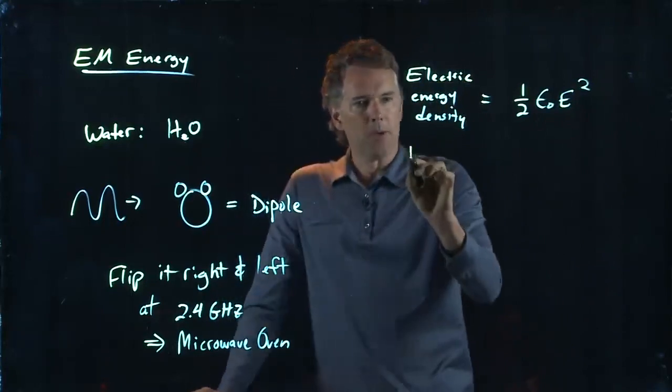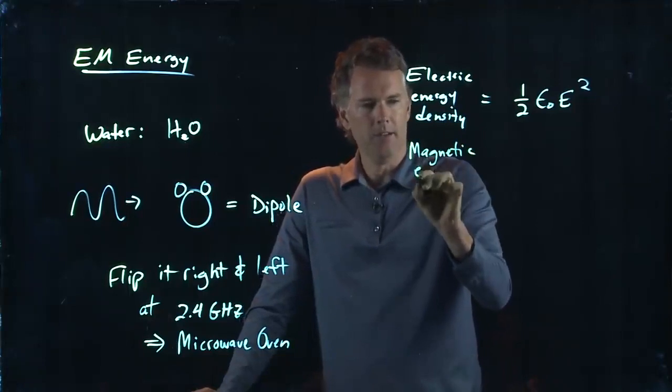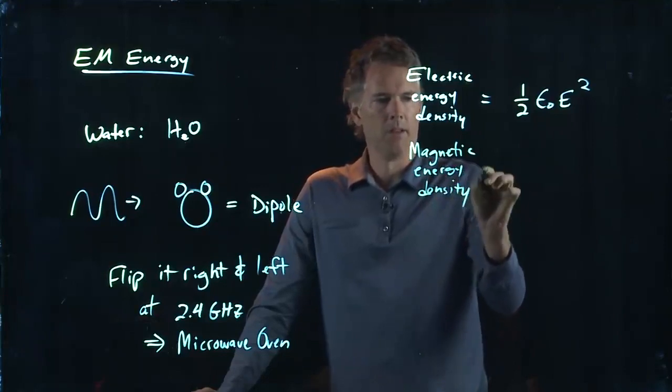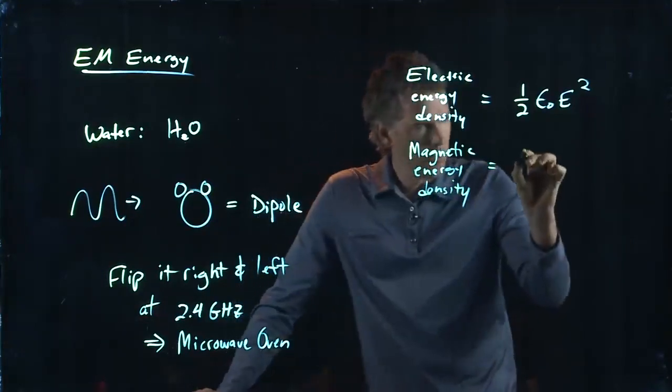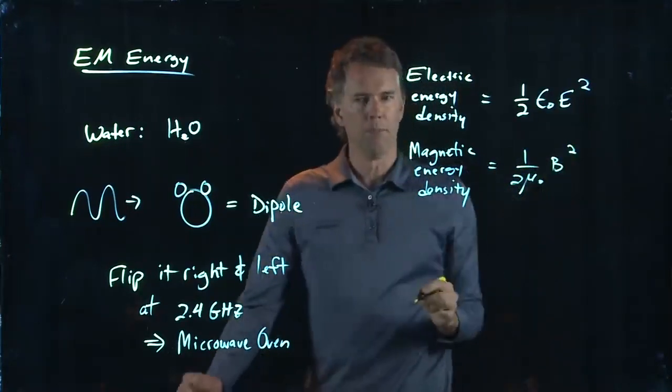In the last chapter, we talked about the magnetic energy density, how much energy is in a magnetic field. And that was one over two mu knot B squared.